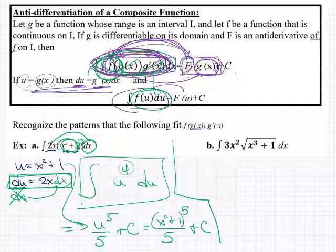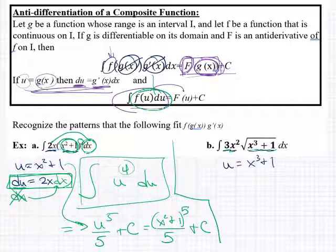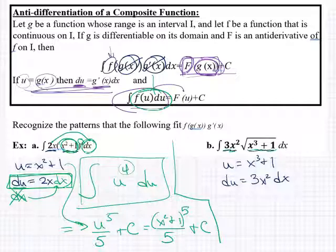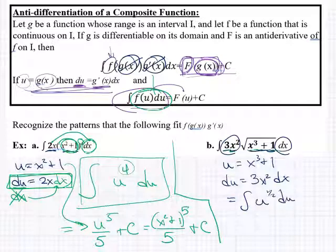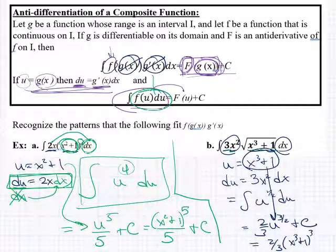Same pattern: identify g and g prime. Let u equal x cubed plus 1, so du equals 3x squared dx. Substituting, you get the integral of u to the 1/2 du. Apply the power rule — add 1, divide by the new power — giving u to the 3/2 times 2/3 plus c. Substitute u back in: 2/3 times (x cubed plus 1) to the 3/2 plus c.